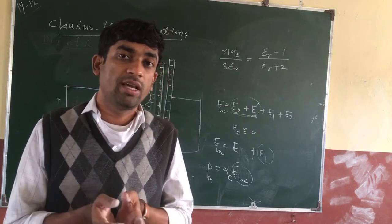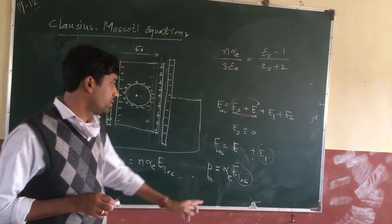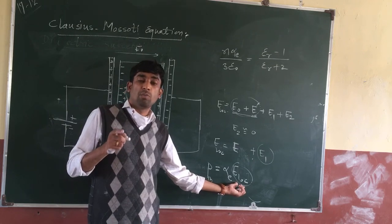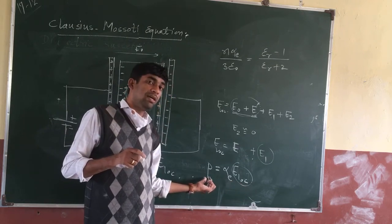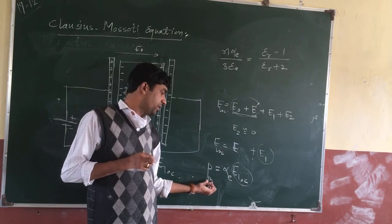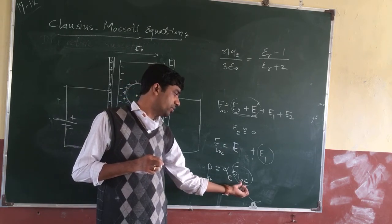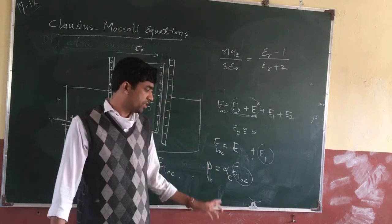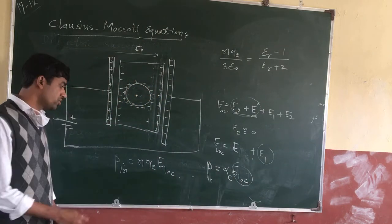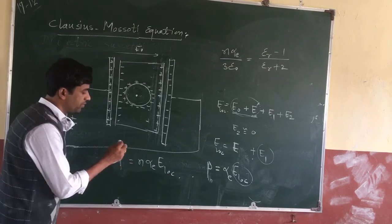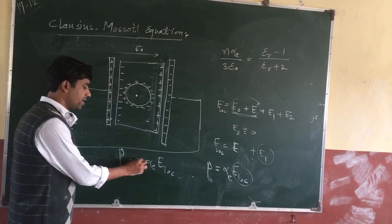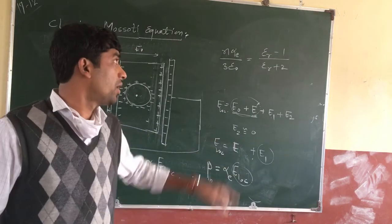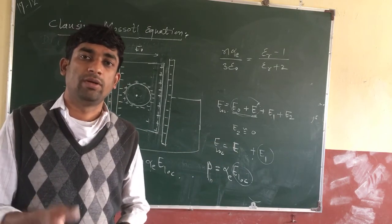So that is the general idea. The local electric field is the electric field experienced by molecules present in the dielectric, and polarization P equals N alpha_E times E_local. In the next lecture, we will go through how to obtain this expression step by step, starting from the derivation. Thank you.